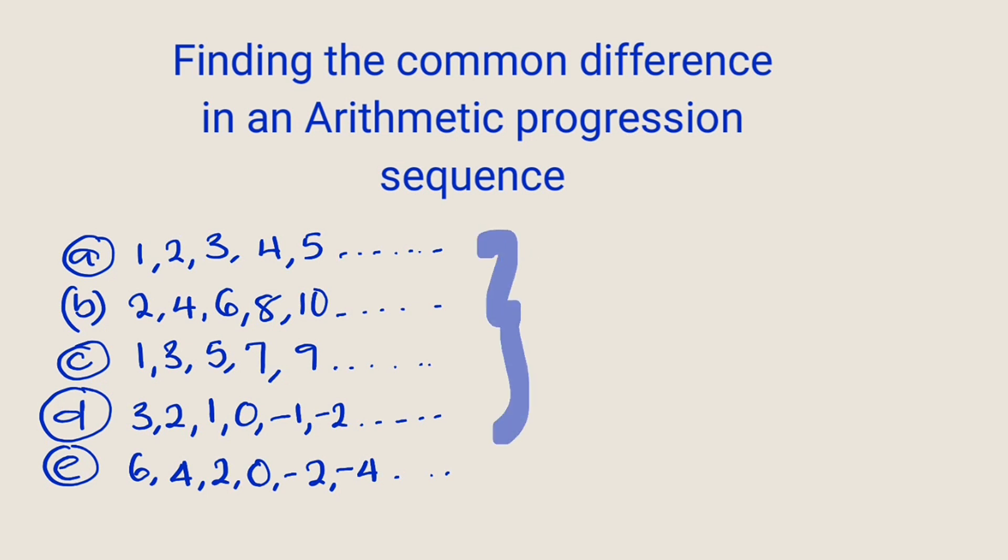Let's begin with the first one. Common difference can be obtained by subtracting a term from the preceding term. So let us take a term at random here. Common difference, which is denoted by d...